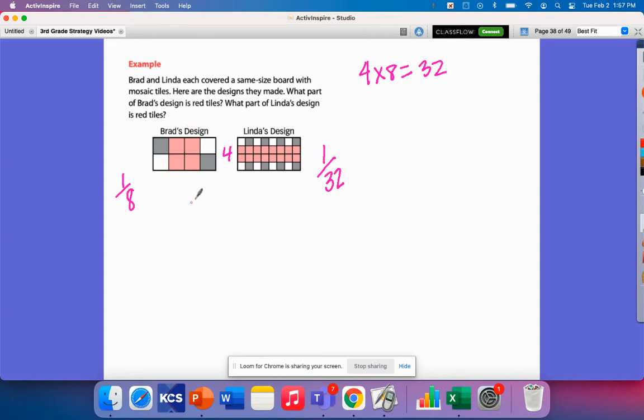Now it wants to know how many tiles are red for both of these. So Brad's would be this section right here. This is what's red. So that's four tiles out of eight. So four out of eight would be a half. So half of his board is red. One half of Brad's board is red.